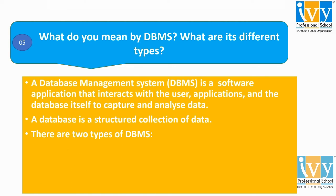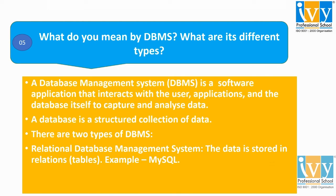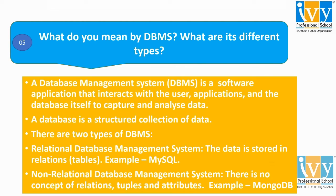There are two types of DBMS: relational database management system and non-relational database management system. A relational database management system is one where the data is stored in relations or tables — for example, MySQL. A non-relational database management system is one where there is no concept of relations, tuples, and attributes — for example, MongoDB.